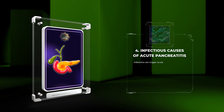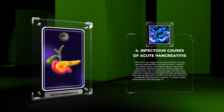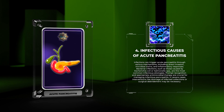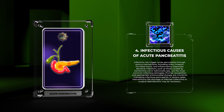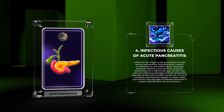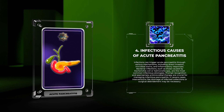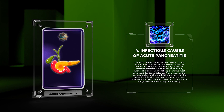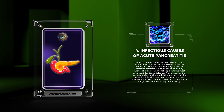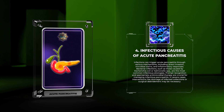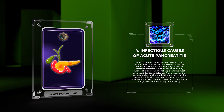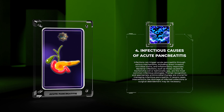Infections can trigger acute pancreatitis through various mechanisms, including direct invasion, microbial toxins, and inflammatory responses. Bacterial infections, such as those caused by Escherichia coli or Salmonella spp., are the most common infectious etiologies. Prompt recognition and appropriate antimicrobial therapy are crucial for managing infectious pancreatitis. In severe cases, interventions like drainage of infected collections or surgical debridement may be necessary.